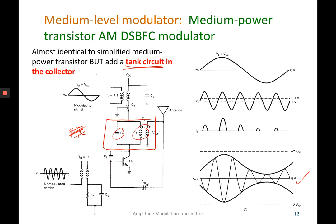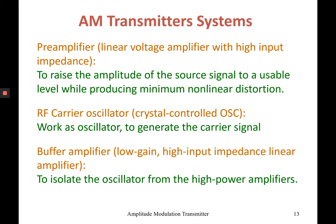The rest of the circuit is the same — the base is connected directly to the carrier, the emitter connects to the base, and the modulating signal is directly applied to the collector.